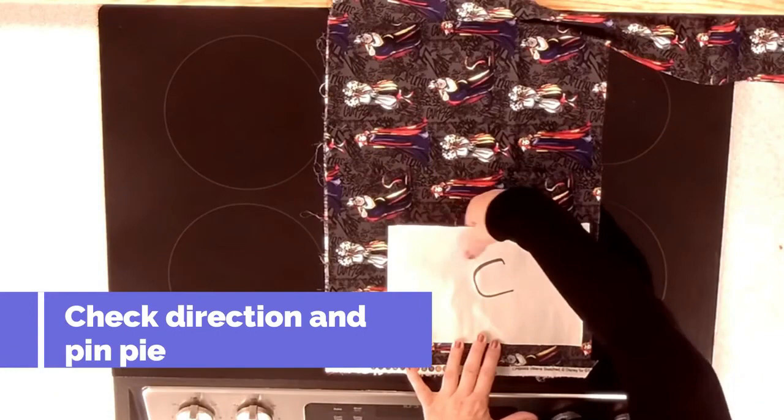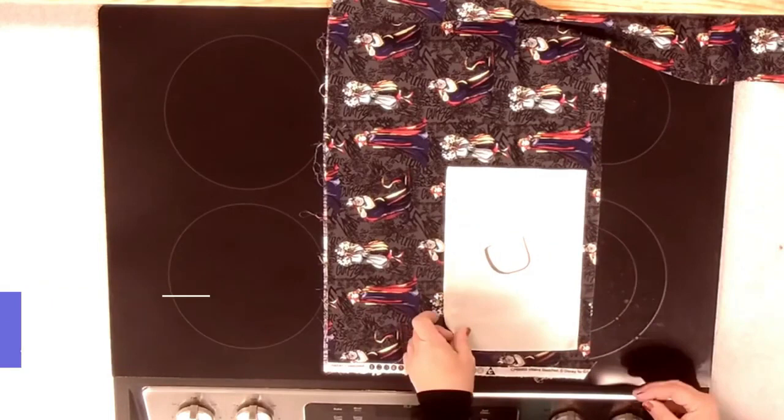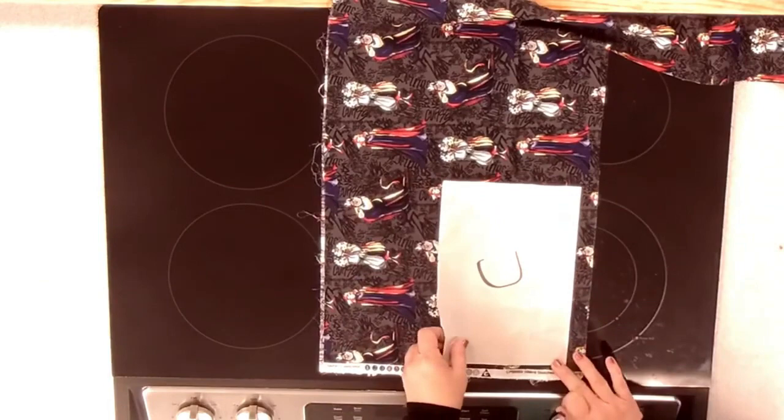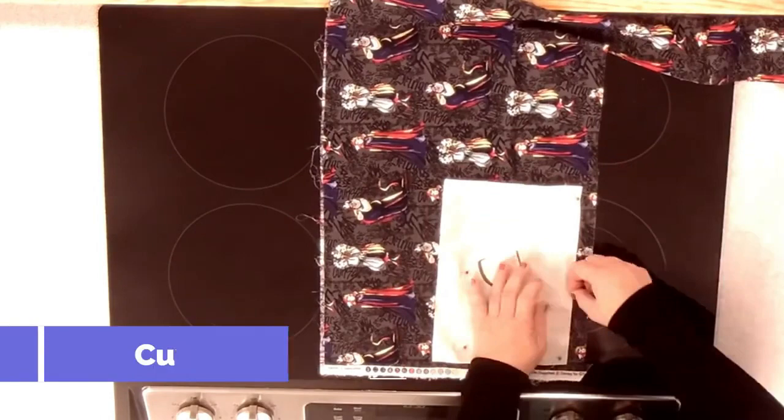You'll do the same thing for piece C which is your pocket. I switched the direction because I want my characters to go up and down on the pocket and I'm going to pin it down and cut around it.